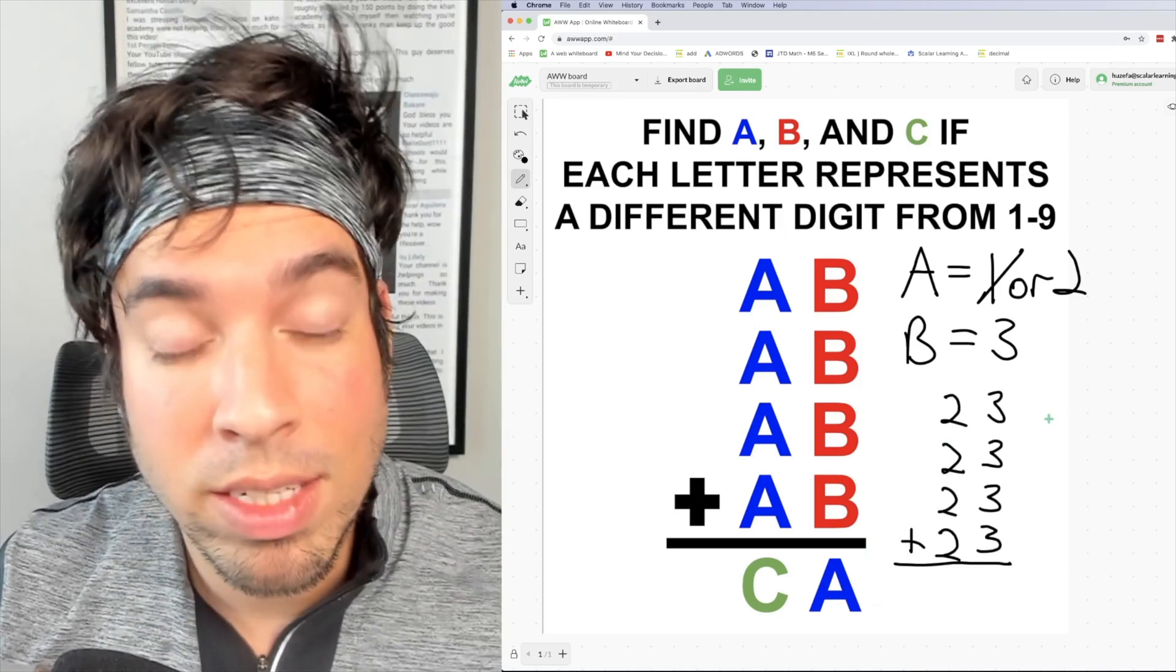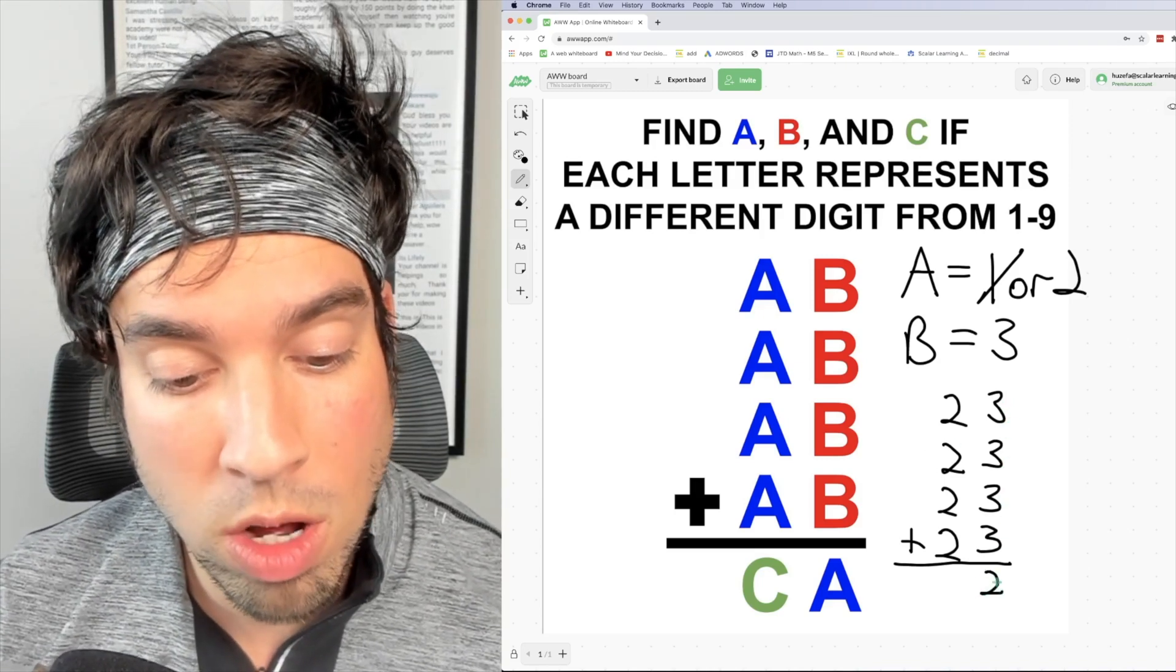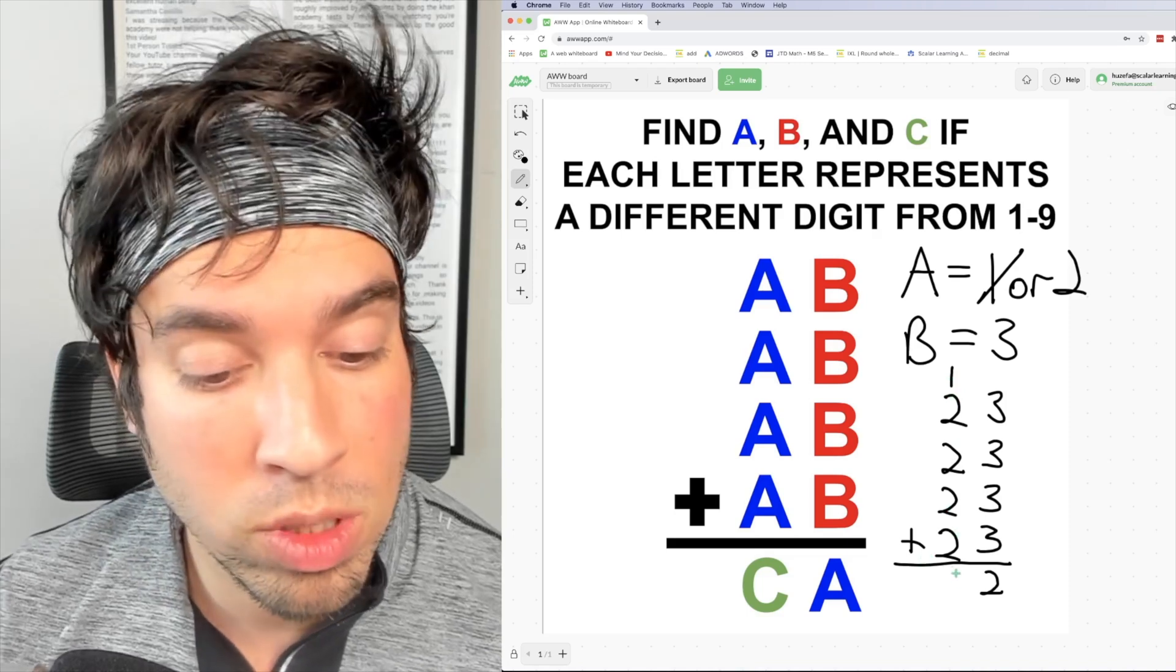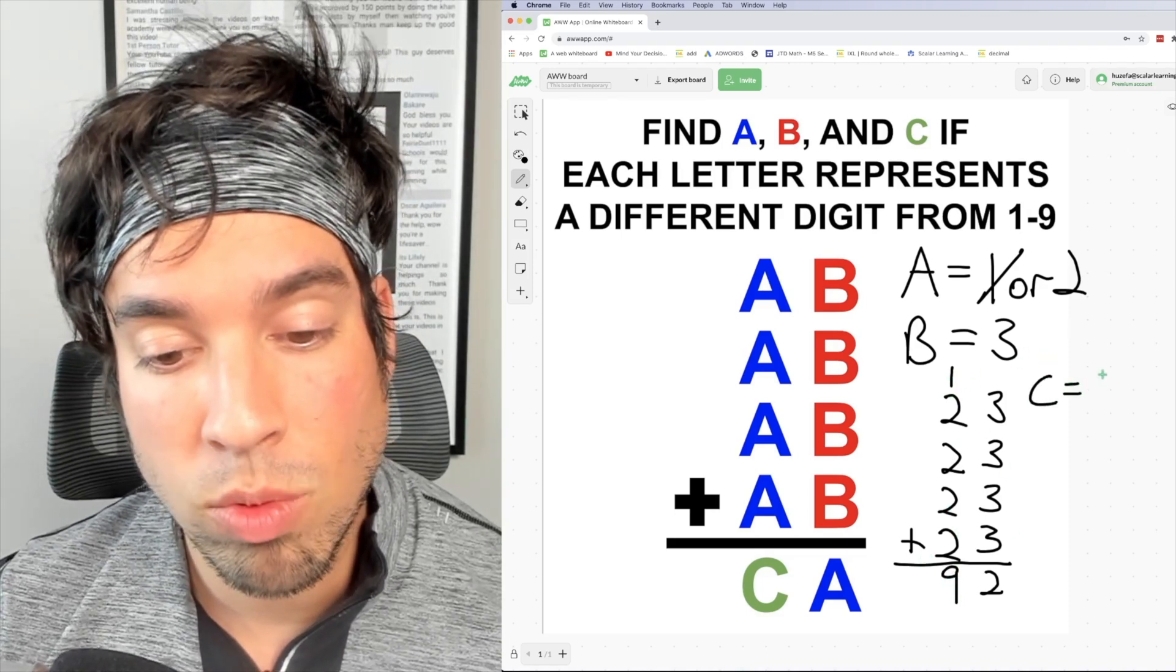Now that we know a and b we can carry out the addition problem. Three plus three plus three plus three is again 12, carry the one, and then one plus four twos is nine. And this of course means that c equals nine.